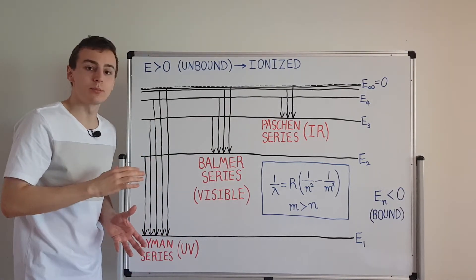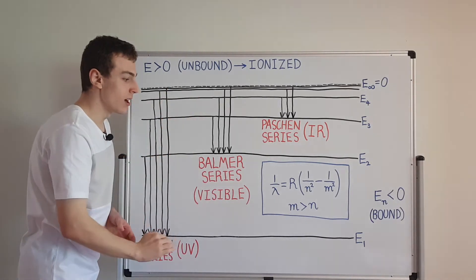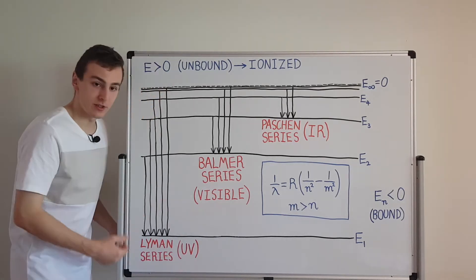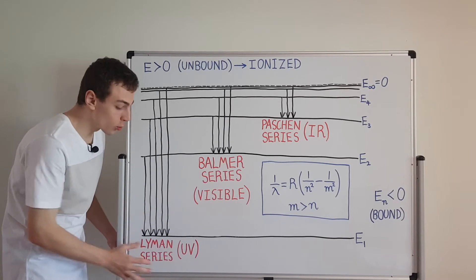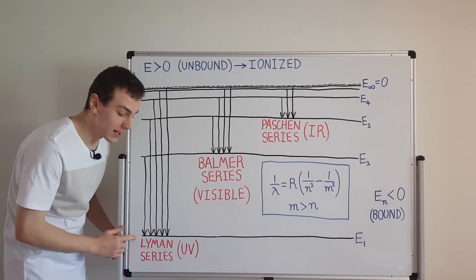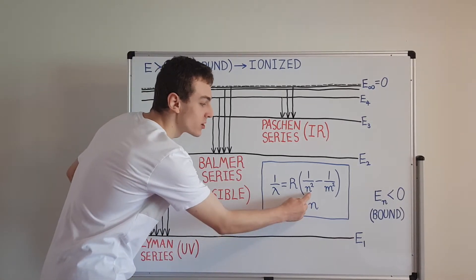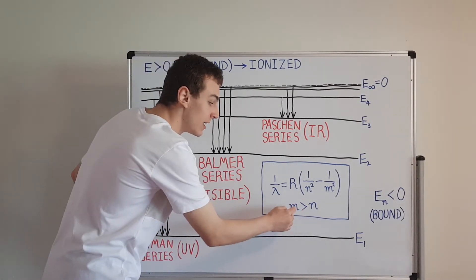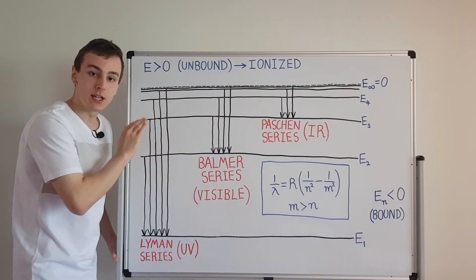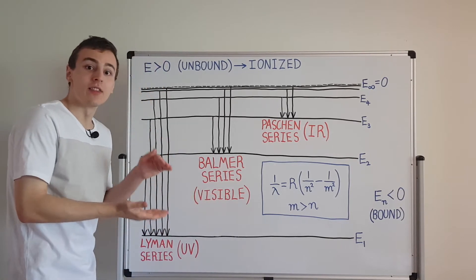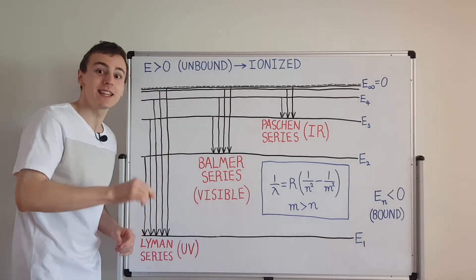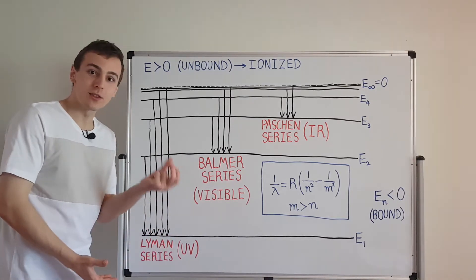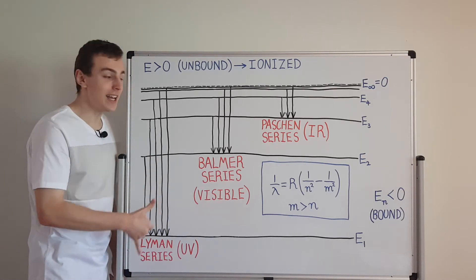If we look at every possible emission from an electron dropping from a higher state to a lower state, we can group them based on what energy level they're dropping down to. The Lyman series groups electrons that all drop down to the ground state, which corresponds to n equals 1. M denotes the initial state and n denotes the final state. The energy difference is what energy is given to the emitted photon, which we measure. From the photon's wavelength we know its frequency and energy, allowing us to infer the energy difference and verify Bohr's model.